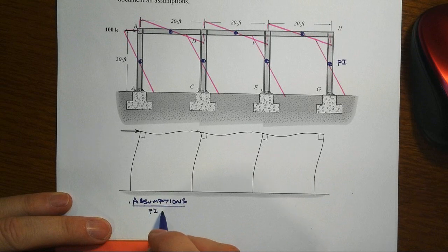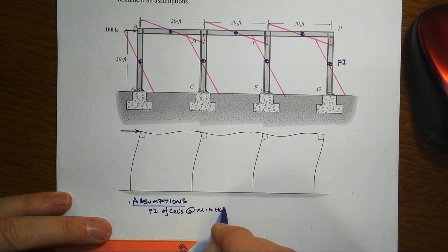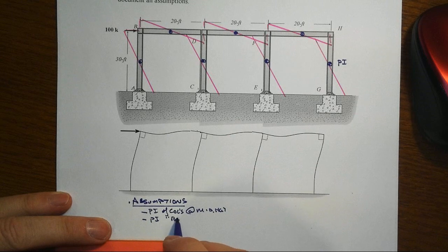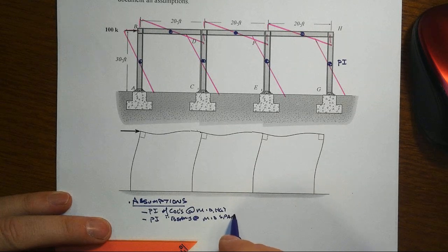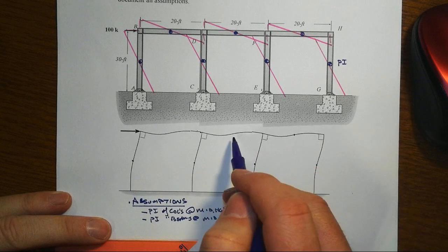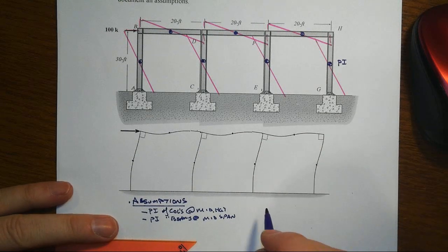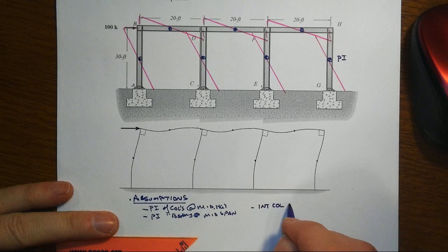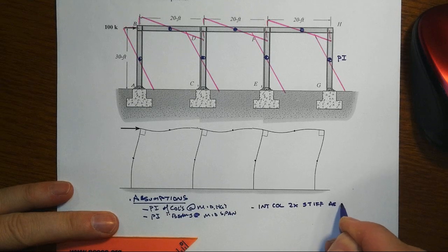are going to be points of inflection of columns at the mid-height, and we will assume that the mid-point of inflection of the beams is at its span. It certainly is what seems to be drawn here is something very much akin to that. Okay, so that's one of the assumptions, and the next one is that the interior columns are twice as stiff as exterior columns.